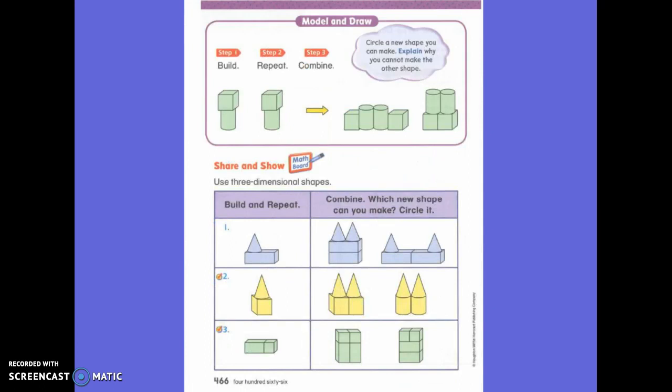But today we're going to talk about how we can make that a little bit different. Let's take a look at the back side. First, it built the shape. What two shapes did it use? Very good. It used a cylinder and a cube. Then it repeated it, which means it did the exact same shape, the cylinder and the cube.